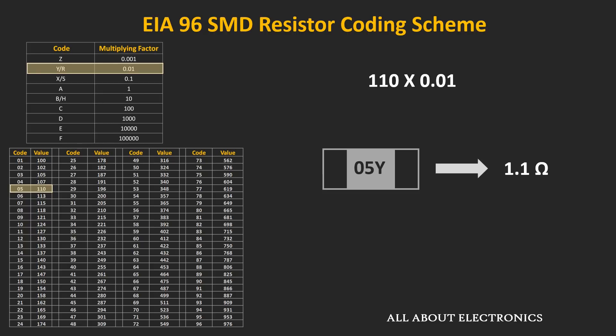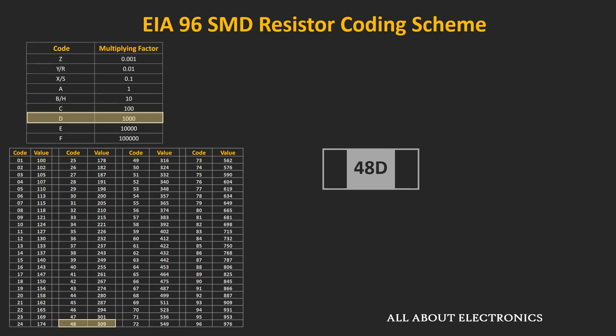Let's take one more example. If the code written on the resistor is 48d, then the value of the resistor is 309 × 1000, which equals 309 kΩ. In this way, using these two tables, we can find the value of the resistor for this type of coding scheme.